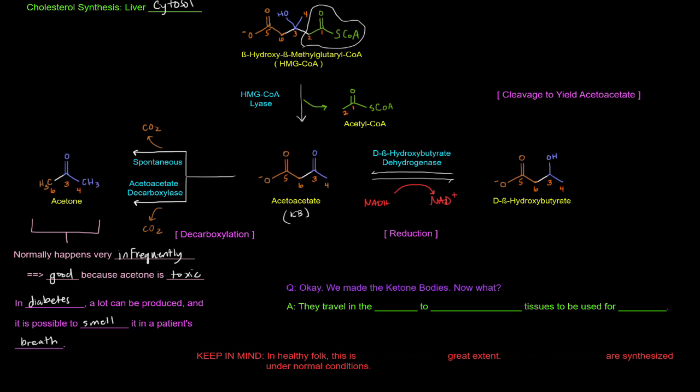Now what? Well, this all happened in the liver mitochondria's matrix. The liver mitochondrial matrix. And so what happens is that these ketone bodies, they're going to travel in the blood to extra hepatic tissues, extra hepatic tissues to be used for energy. Now, something I want you to keep in mind is that in healthy individuals, this is not happening to a great extent. This is happening very, very little. Very few ketone bodies are synthesized under normal conditions. It's normal for ketone bodies to be synthesized, but not to a great extent.